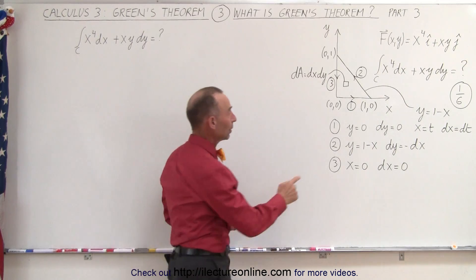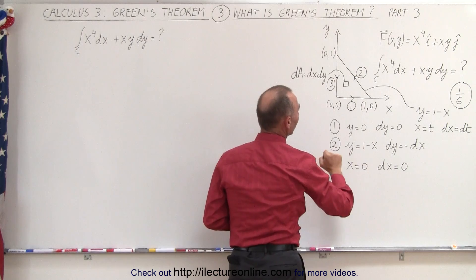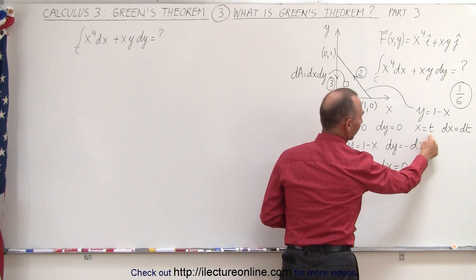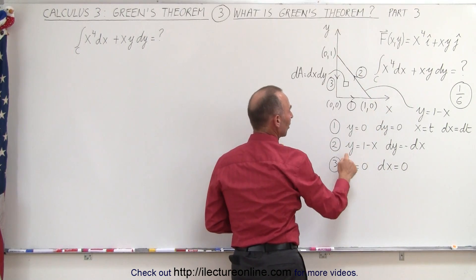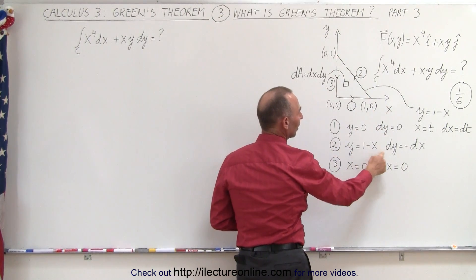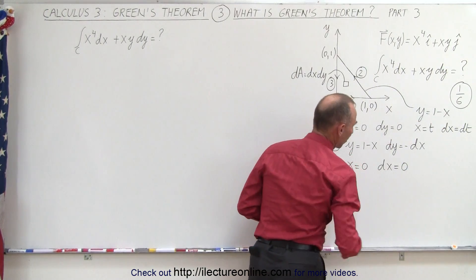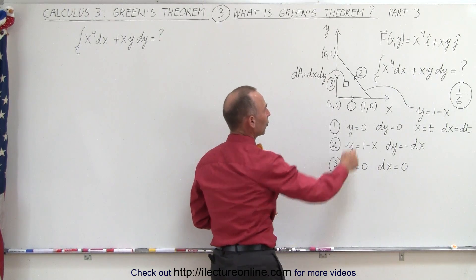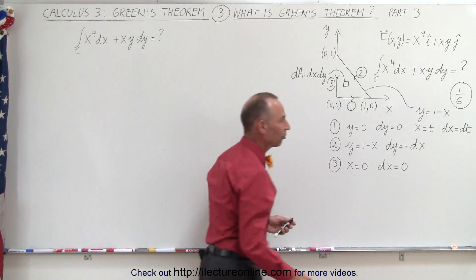Now the equations for the three lines. On the first one, we realize that y equals 0, so dy equals 0, and we can use a parametric equation where x equals t, therefore dx equals dt. On the second line, we have the equation y equals 1 minus x, therefore dy equals minus dx, and again, we can translate that to the parametric equations where x equals t and dx equals dt. And for the third equation, we can see that x equals 0 and dx equals 0.